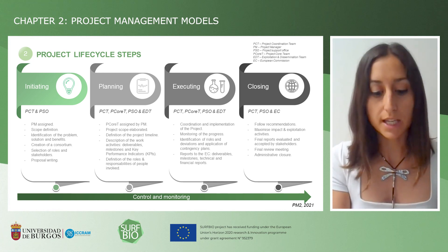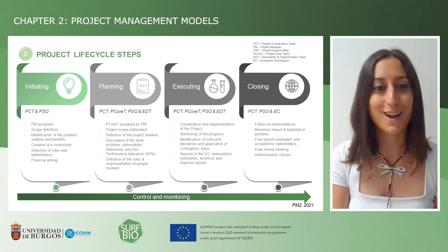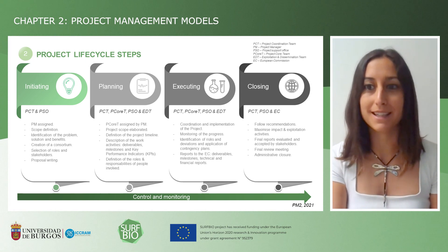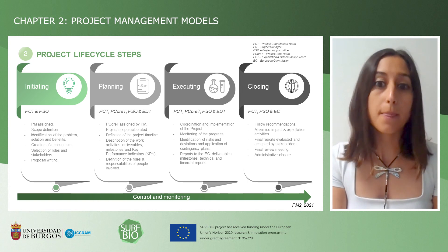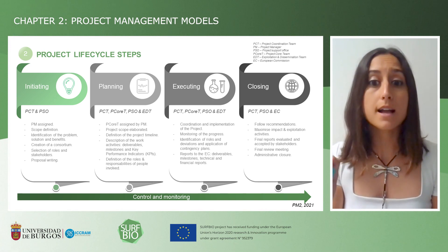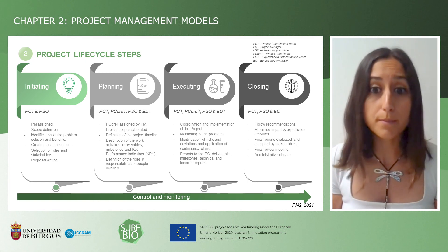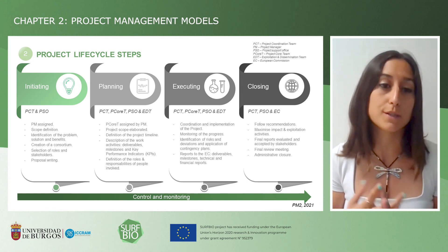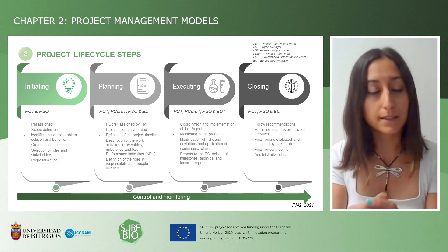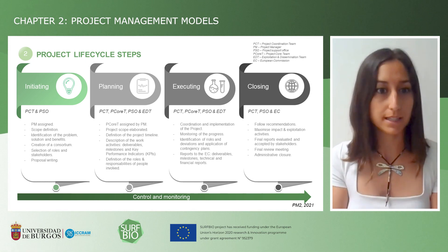The initiating phase, which will be explained in more detail by one of my colleagues — so you can check her video later on — is comprised by the project coordination team and the support office. During this phase, a project manager is assigned and the scope of the project is defined. We need to identify what the problem is, which solution we want to implement, and what the benefits of our project are. Then we create a consortium from experts within the topic we want to develop, select roles and stakeholders, and then the proposal writing starts.